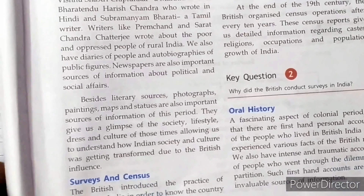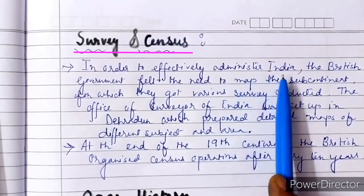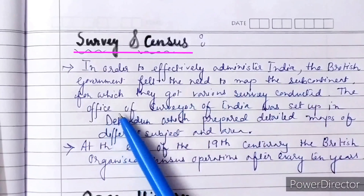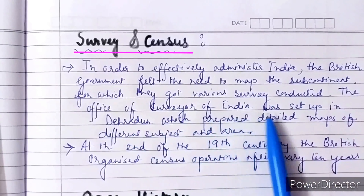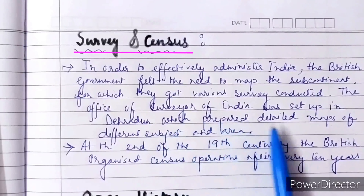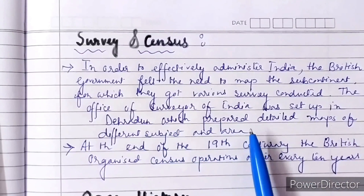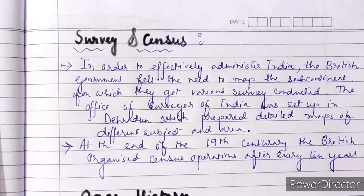Our next topic is survey and census. In order to effectively administer India, the British government felt the need to map the subcontinent, for which they got various surveys conducted. The office of the Surveyor of India was set up in Dehradun, which prepared detailed maps of different subjects and areas. These surveys and maps give us detailed information about the flora and fauna, meaning wildlife and forest life, crops and soil, and topography of India. Topography means various landforms and relief.